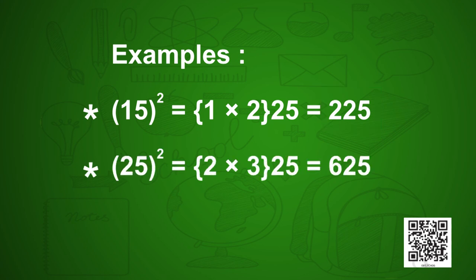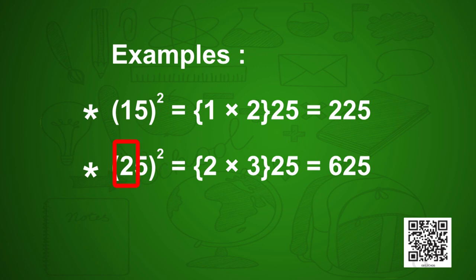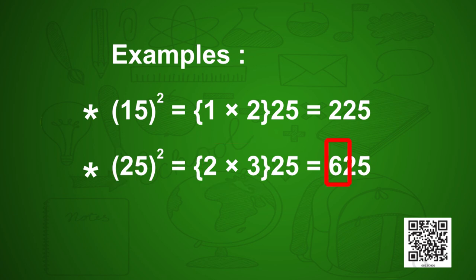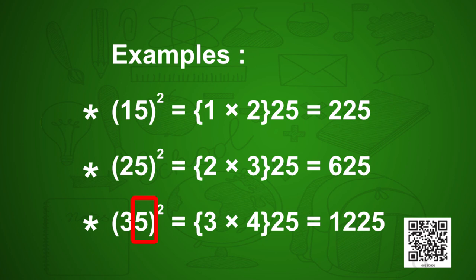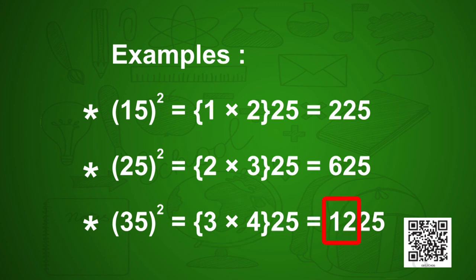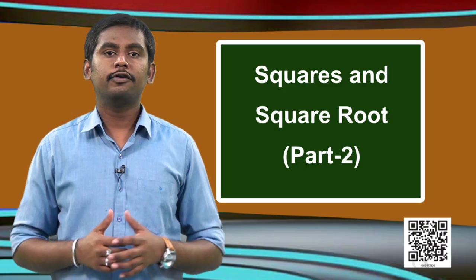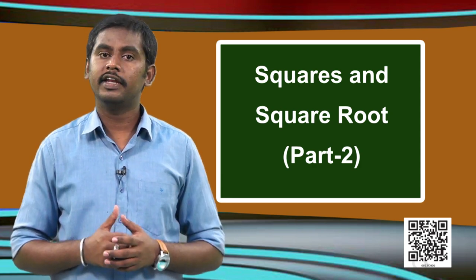For 25²: 5² = 25, tens digit is 2, next digit is 3, so 2 × 3 = 6. Therefore 25² = 625. For 35²: 5² = 25, tens digit is 3, next digit is 4, so 3 × 4 = 12. Therefore 35² = 1225. Similarly, we can find the squares of any 2-digit number ending in 5.